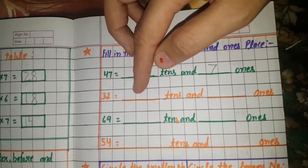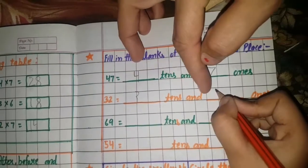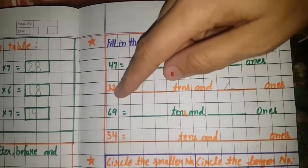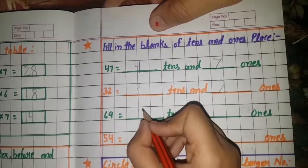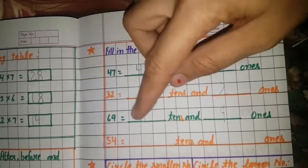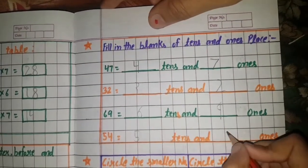32. 3 tens and 2 ones. Next. 6 tens and 9 ones. Next. 5 tens and 4 ones.